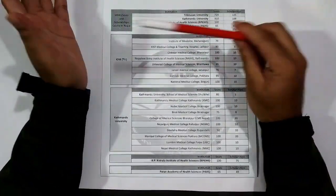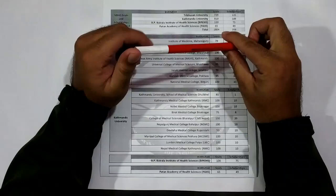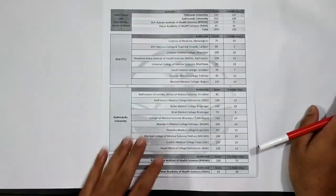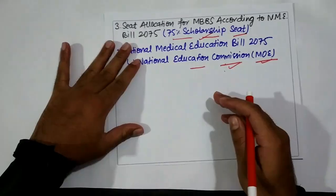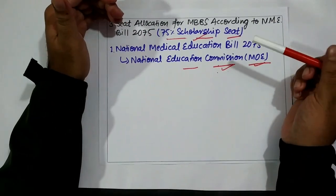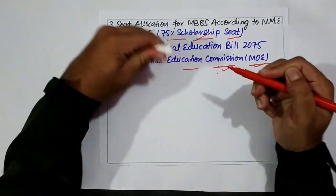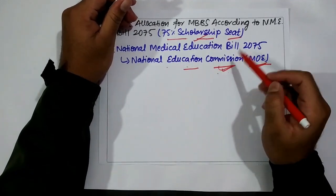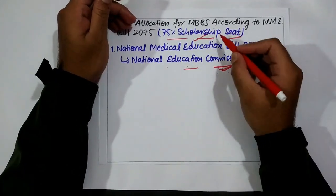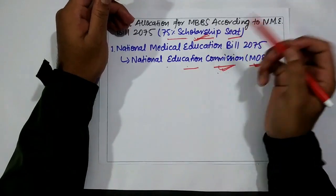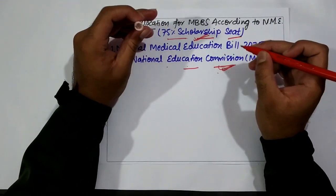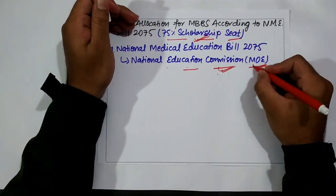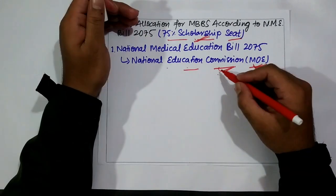Now before I make any statement about whether this image is real or fake, let's go back to our National Medical Education Bill. If we look at our bill, it clearly states that the MOE will form the National Education Commission, and the Commission will allocate the 75% scholarship seats to different medical colleges.